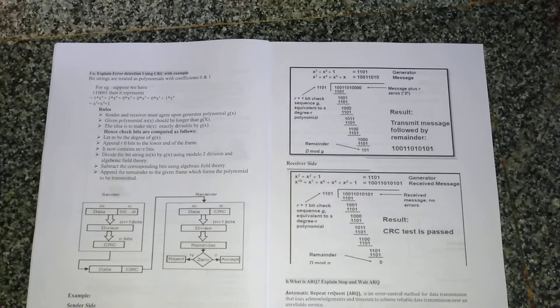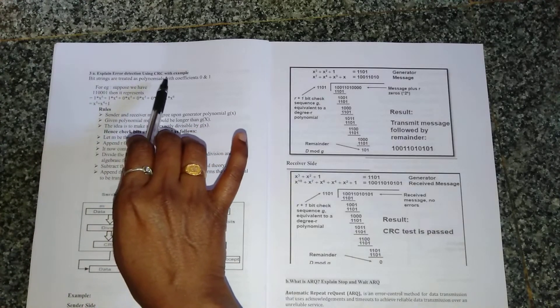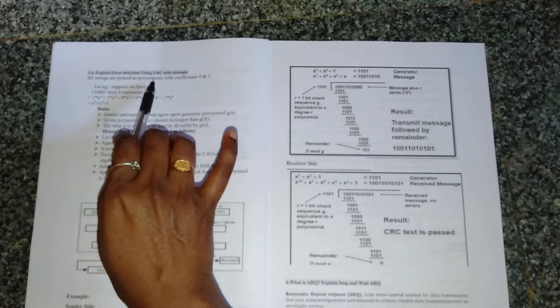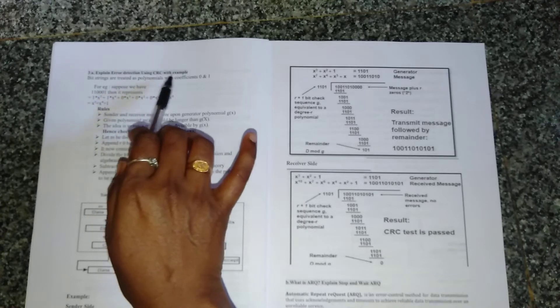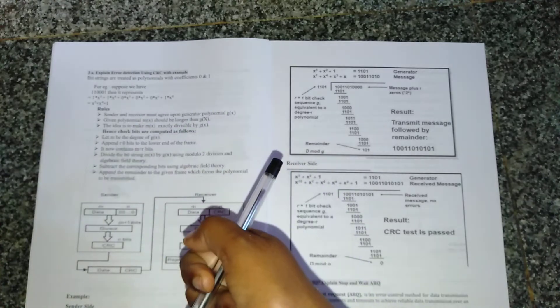In this session we are discussing the most important question asked in a theory exam: explain error detection using CRC with an example. CRC means Cyclic Redundancy Check. Using this technique, we have to detect errors in whatever messages the sender sends.